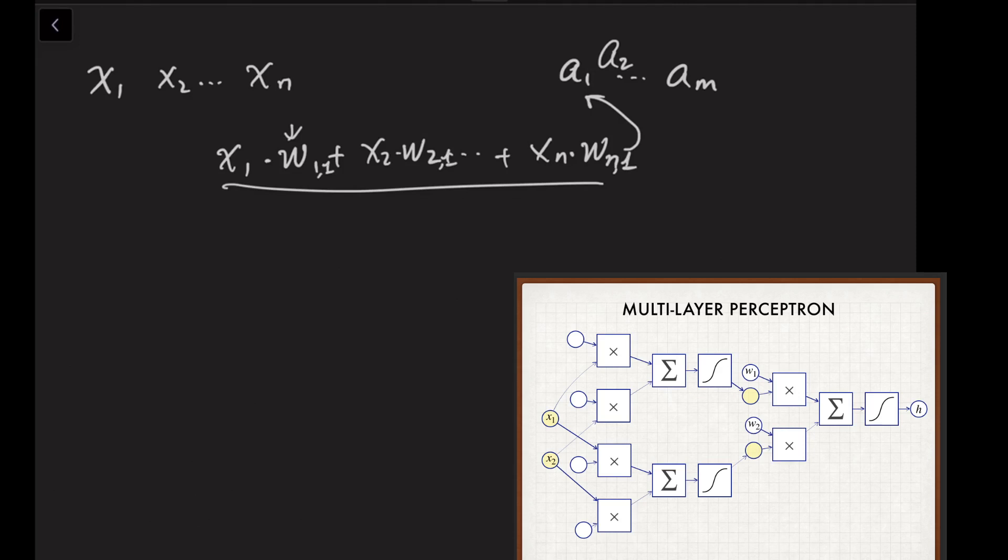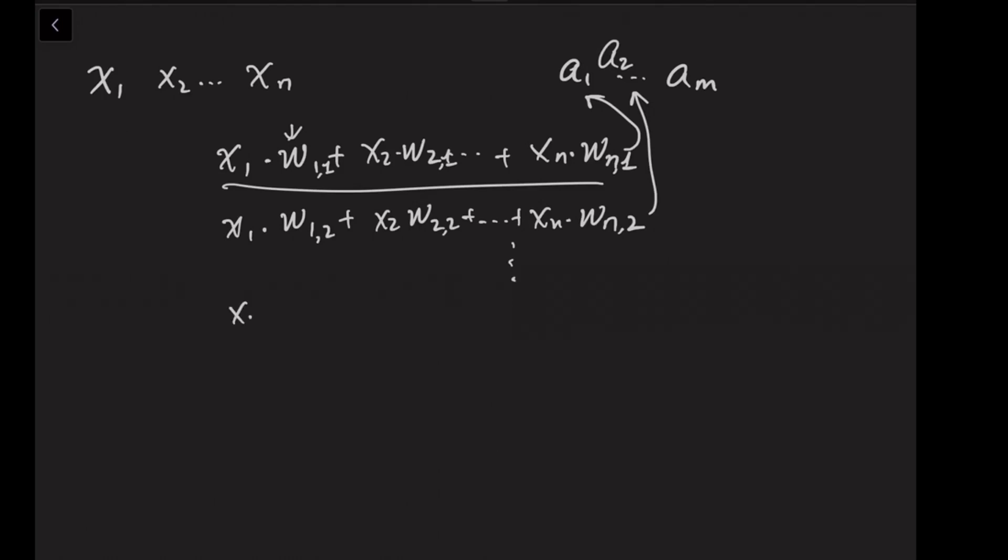Let's write another one here to distinguish the computation of a1 and a2. We can write out the computation of a2: x1 times w1, x2 times w2 until xn times wn, but now the mark for the output is 2. So we can write all the way down until we've arrived at am: x1 times w1m, x2 times w2m, xn times wnm, with a subscript of m, and this will be given to am.